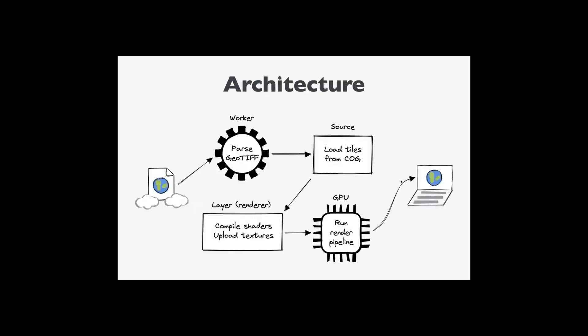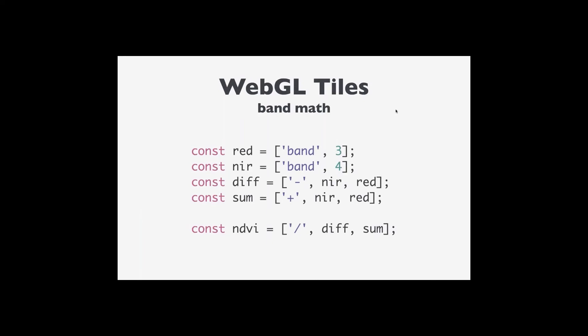Under the hood, we use the geotiff.js library to parse GeoTIFFs in a web worker, so this is off the main thread. The source loads tiles from the GeoTIFF, converts them into typed arrays band-interleaved by pixel, and binds them to textures. We also compile shaders based on the style expression, then run the render pipeline on the GPU, stitch everything back together, and display it in the browser.